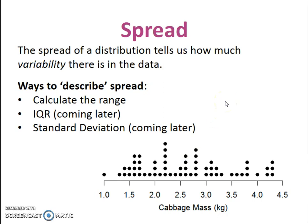Another way to describe the distribution is by talking about spread — it tells us how much the data varies. There are three ways to describe spread: you can calculate the range, the IQR (interquartile range), or the standard deviation. We'll talk about how to calculate those later. For example, if I wanted to quickly find the range here, my minimum value is at 1 and my maximum is at 4.3, so 4.3 minus 1 gives a range of 3.3 kilograms. Always include your units.